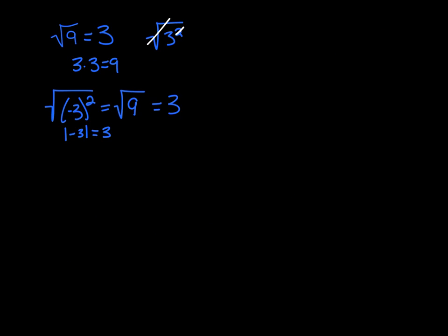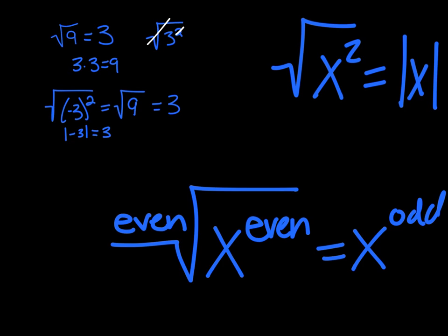Therefore, if we're taking the square root of x squared, even though in our head we may think it's x, it's really the absolute value of x. So more generally, if we have an even index and an even exponent inside, and it results in an odd exponent, then we put absolute value bars around the x. This rule gets more complicated, but this is a good basic rule to follow.